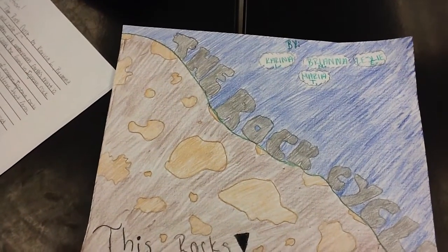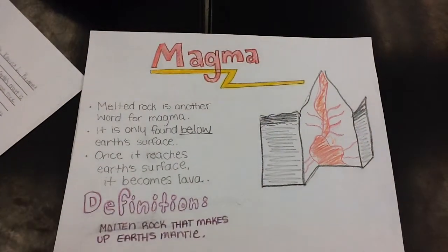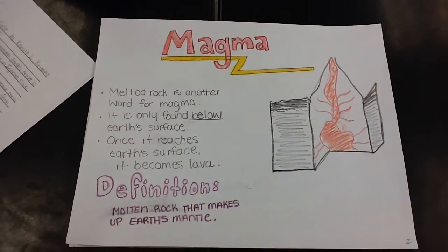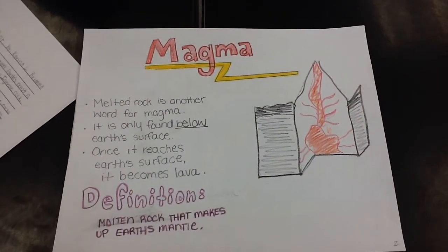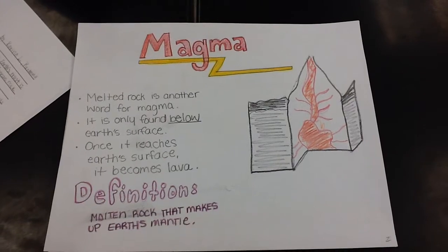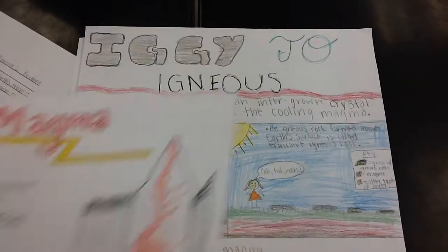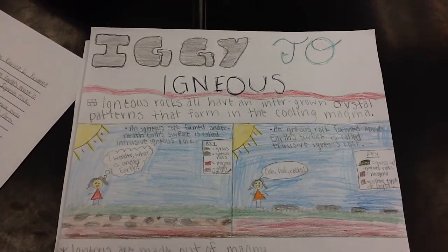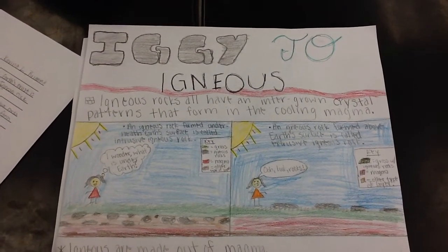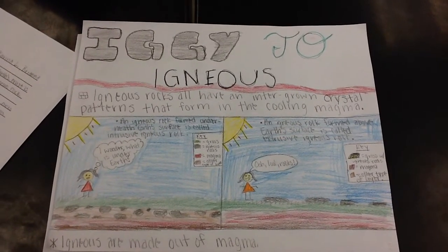The molten rock underneath Earth's crust is called magma. Magma can be found in igneous rocks. Igneous rocks all have an intergrown crystal pattern that form in a cooling magma.